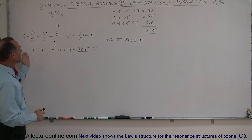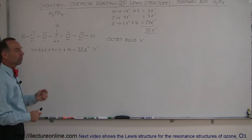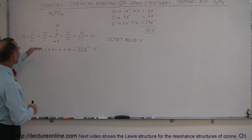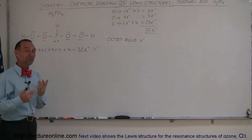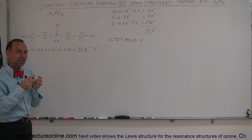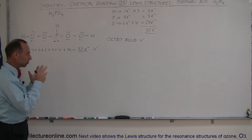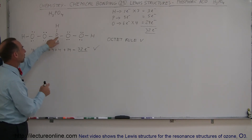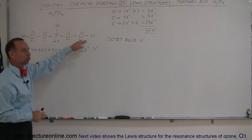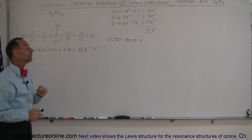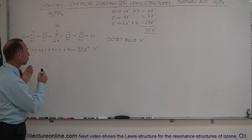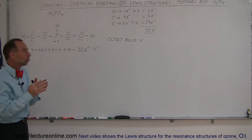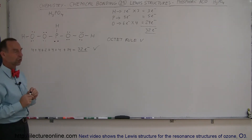Notice that we have a perfectly legitimate structure here, but one rule we haven't considered is somewhat violated. This is a very linear structure, and one of the basic rules when drawing a Lewis structure is that the real way molecules are formed is that they tend to be much more concentrated around the central atom. A linear structure is not likely to be found in nature, so let's see if there's another way to form a more compact structure.